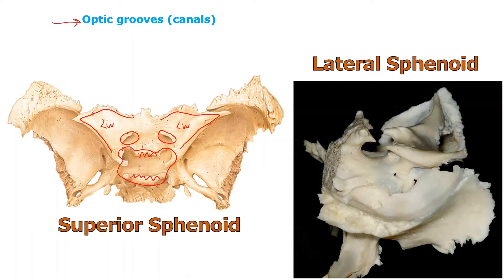Different people have named these structures different things over the years and I'm just telling you the most common terms. So right here we have the optic grooves or optic canals. You're going to see the optic nerves go through there, connecting the eyeball to the brain.